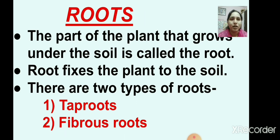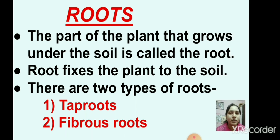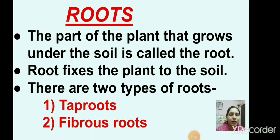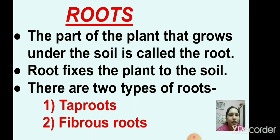Now we will see about the roots first. The part of the plant that grows under the soil is called root, and root fixes the plant to the soil. There are two types of roots: the first one is tap roots and the second one is fibrous roots. These are the two types of roots generally found in plants.